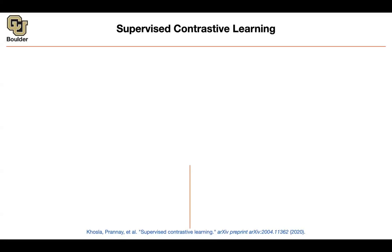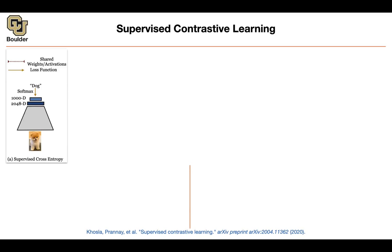We are going to build upon that idea and relax the assumption a little bit. What if you have labeled data? Can you borrow ideas from contrastive learning and get even better features? For images, we have ImageNet — labeled data — and it's not that hard to label images: you look at an image and say there is a dog here, and human labelers do the job.